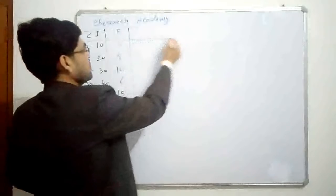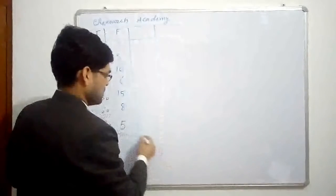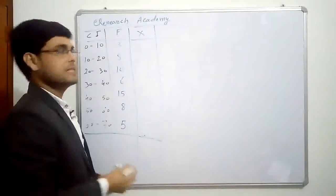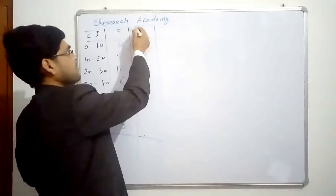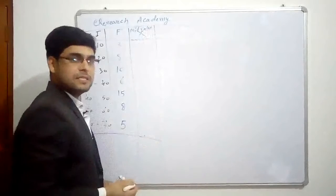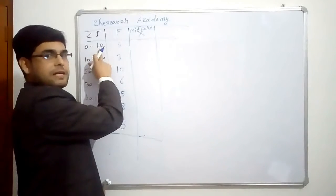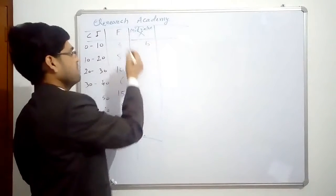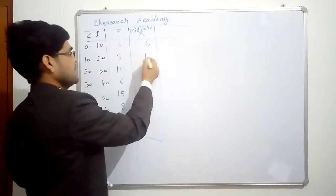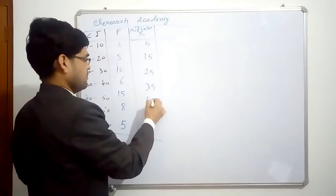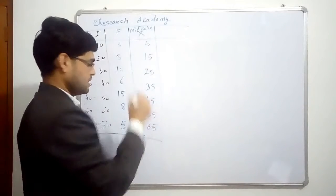First we have to find out the x value. X is nothing, it is just a mid value. Mid value here means lower limit of the class interval plus upper limit of the class interval divided by 2. So here 0 plus 10 by 2, it will give you 5. And same for the rest of the class intervals as well. So it will be 15, 25, 35, 45, 55 and 65.